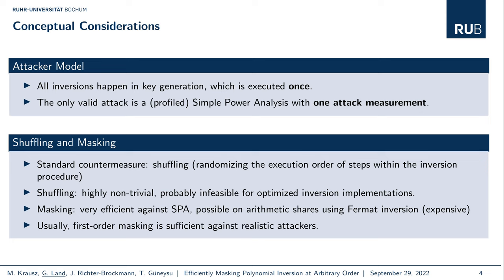A similar attack might be possible on BIKE, NTRU and streamlined NTRU Prime, so we have to counter this. The standard countermeasure against attacks with access to only one trace would be shuffling — randomizing the execution order of steps within the inversion procedure. But shuffling is highly non-trivial and maybe even infeasible for the optimized inversion implementations deployed for BIKE, streamlined NTRU, and NTRU Prime. Masking could be deployed instead, but using arithmetic shares would require Fermat inversion, which would be very expensive.